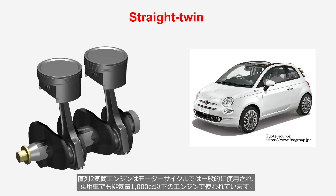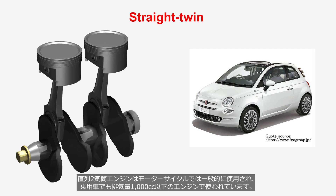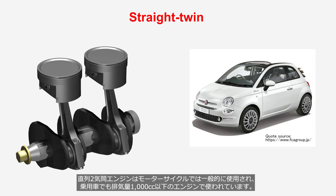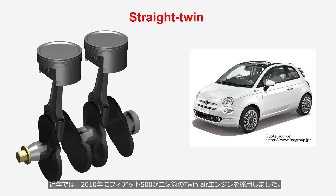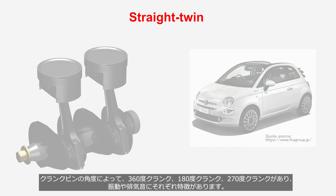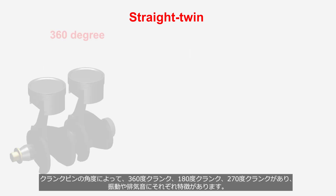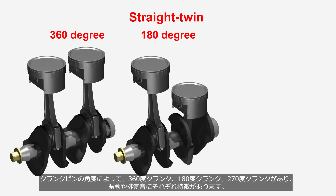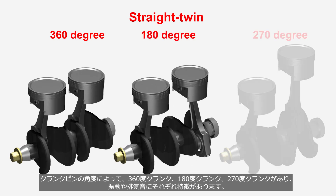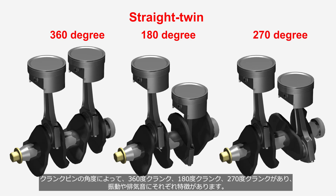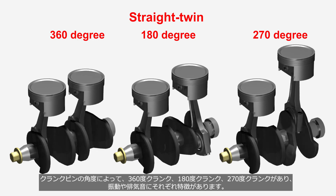Straight twin engines are commonly used in motorcycles, and are also employed in passenger cars with engine displacements of 1000cc or less. The Fiat 500 adopted a straight twin engine named Twin Air in 2010. Depending on the angle of the crankpin, there are 360-degree, 180-degree, and 270-degree crank configurations, each with distinct characteristics in terms of vibration and exhaust sound.